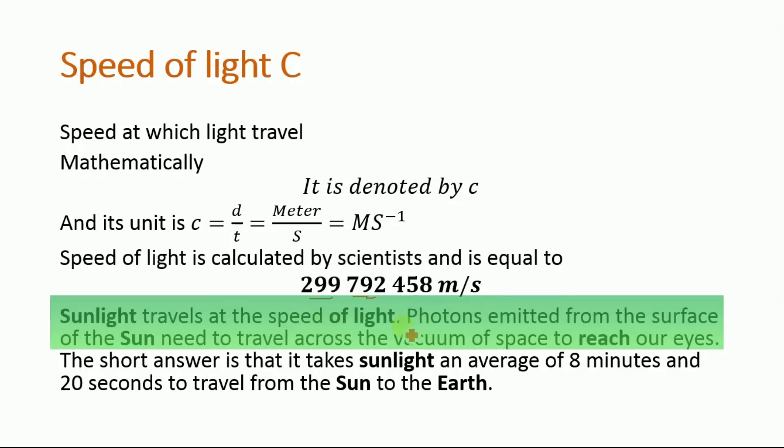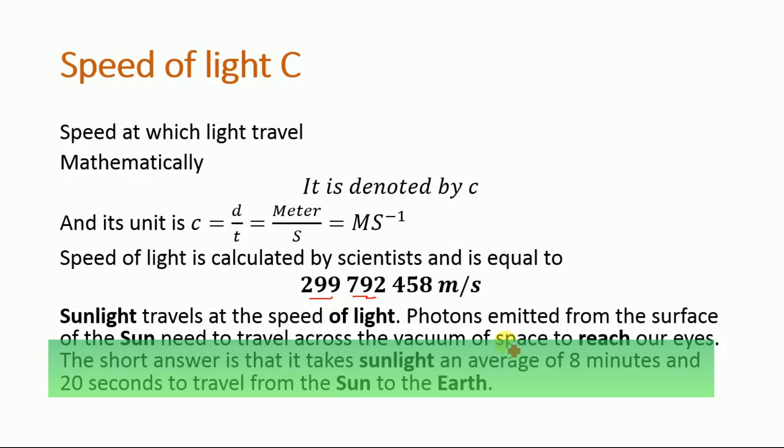Sunlight travels at the speed of light. Photons or the sunlight emitted from the surface of the sun need to travel across the vacuum of space to reach our eyes. The short answer is that it takes sunlight an average of 8 minutes and 20 seconds to travel from the sun to the earth.